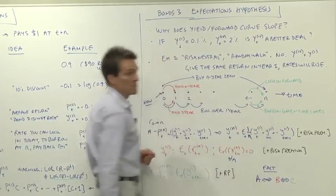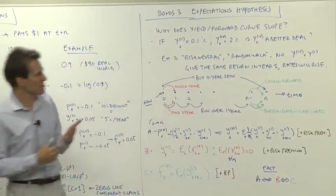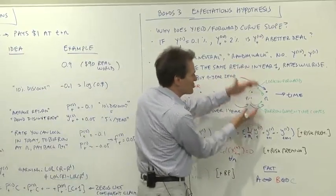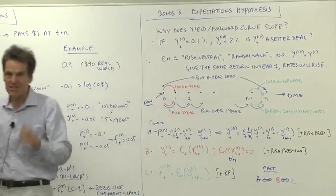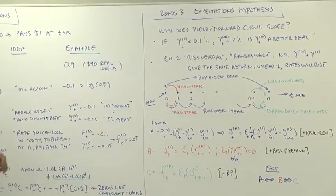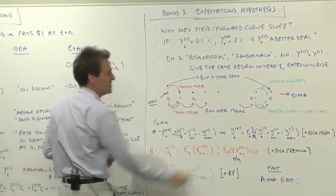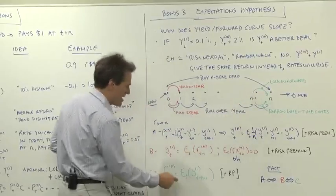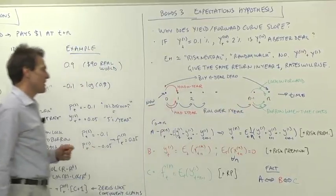If there's a bunch of arbitrageurs making that decision, they're going to drive prices to where those two things have on average the same rate of return. So the forward rate, that is the locking in, should be equal to the expected value of the future spot rate.